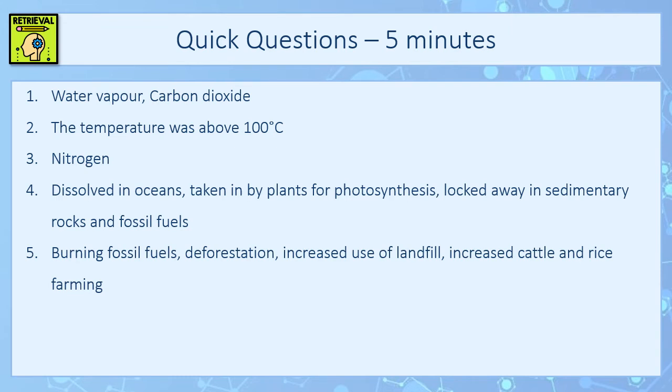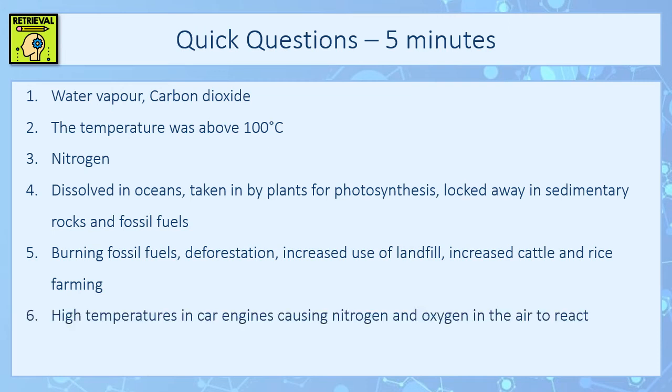Human activities that have led to an increase in greenhouse gases include burning fossil fuels, deforestation, increased use of landfill, or increased cattle or rice farming. Nitrogen oxides are formed because high temperatures in car engines cause the nitrogen and oxygen in the air to react with each other. The reason you wouldn't want to burn a fuel with a high percentage of sulphur is that you'll form sulphur dioxide, which contributes to acid rain.